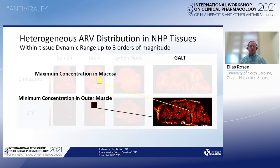We quantify this in terms of the tissue dynamic range, reflecting the ratio of the maximum concentration in mucosa to the minimum concentration in muscle, and we found that the dynamic range can vary up to three orders of magnitude within a tissue section.